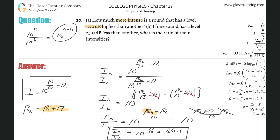Now letter B: if one sound level has a level 23 decibels less than another, what is the ratio of their intensities? We're not going to go through the whole derivation again. If one value is 23 less than another, that's the same as saying the other value is 23 more. So the higher beta value will be equal to the lower beta value plus 23. We can use the same formula: the higher intensity relative to the lower will be equal to 10 raised to the higher beta minus the lower beta, all over 10.